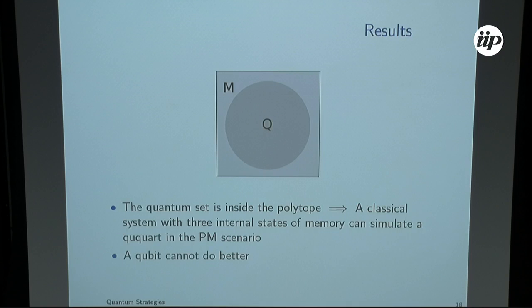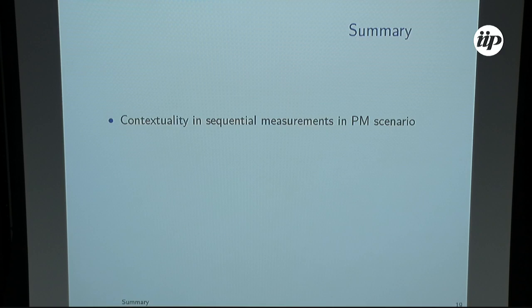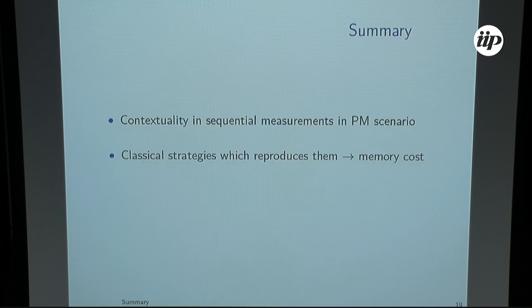Just a summary. We looked at contextuality in sequential measurements in the Peres-Mermin scenario. We see that the classical strategies to reproduce them lead to the notion of memory cost. The memory cost of the Peres-Mermin is log two of three states. And there's no quantum advantage for looking at this scenario. Thank you very much for your attention.